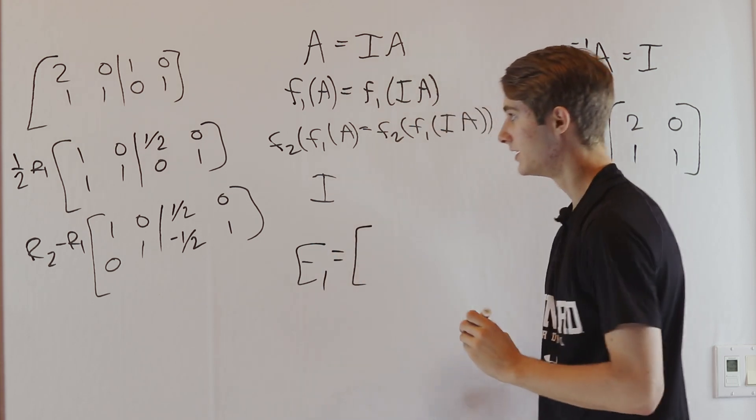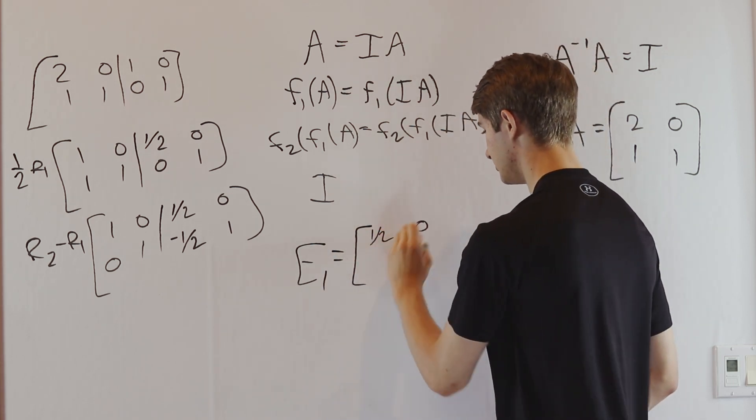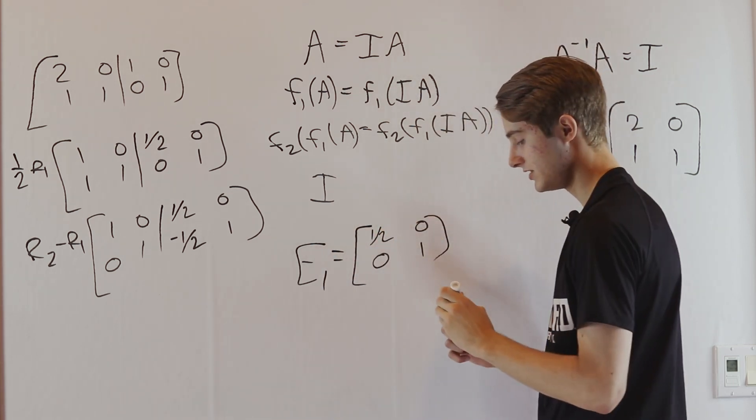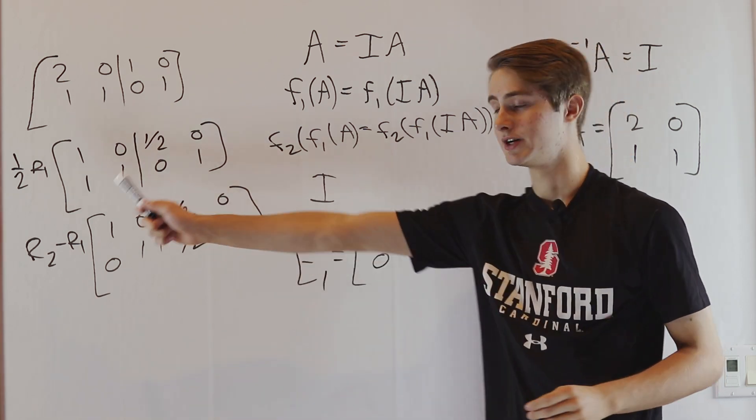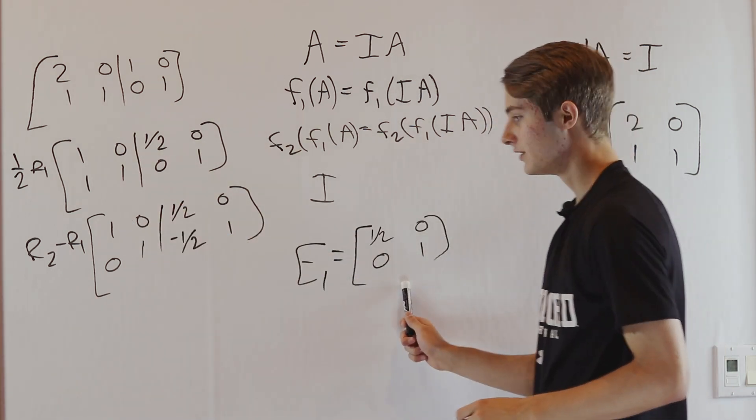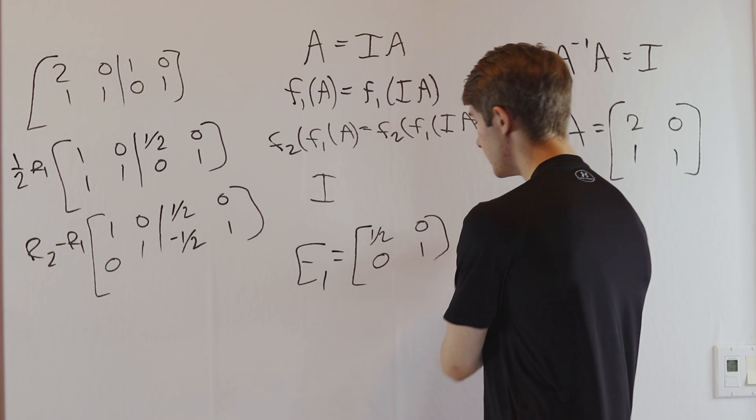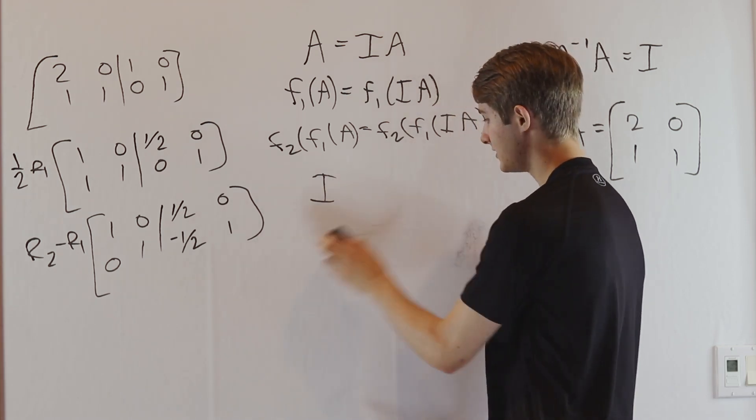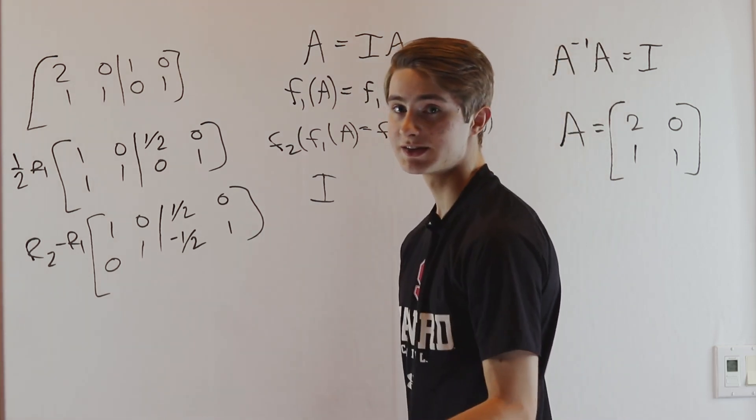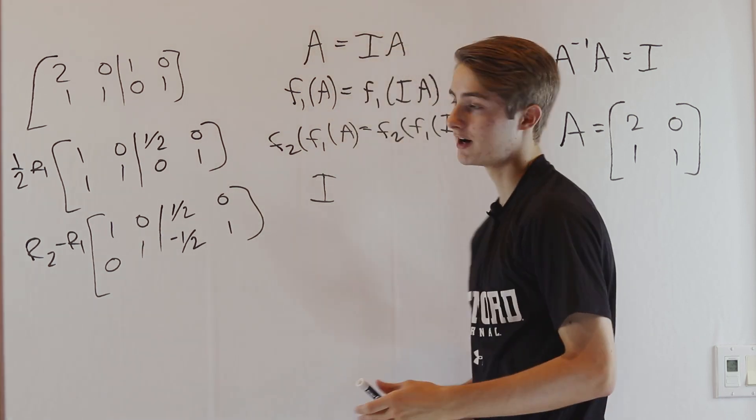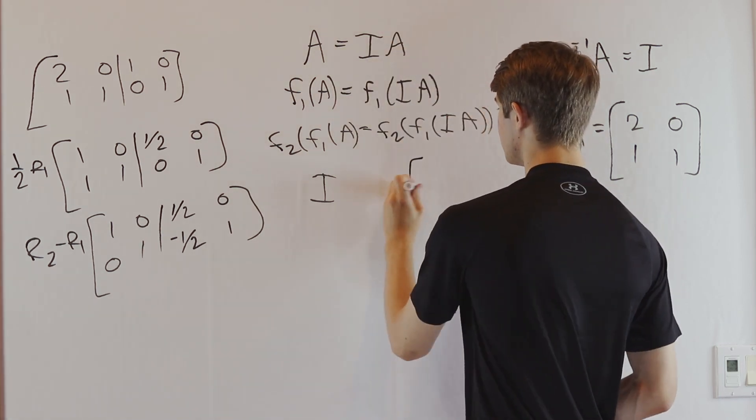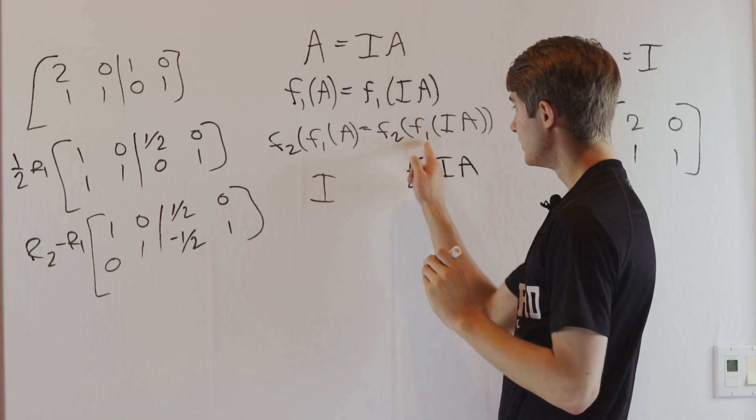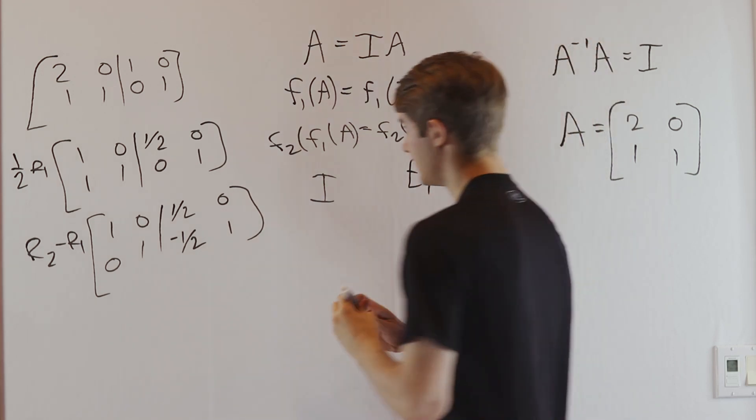In this case, that matrix is [1/2, 0; 0, 1] because this takes the identity and does (1/2)R₁. If we multiply E₁ by IA, it has the exact same effect as f₁(IA). So we write E₁·IA, which corresponds to f₁(IA).